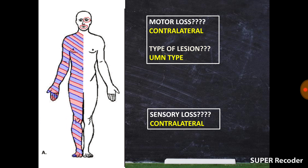Because the pyramids cause an upper motor neuron type of lesion, all features of right-sided hemiplegia will be upper motor neuron in nature — for example, there will be increased tone, exaggerated deep tendon reflexes, and a positive Babinski sign.